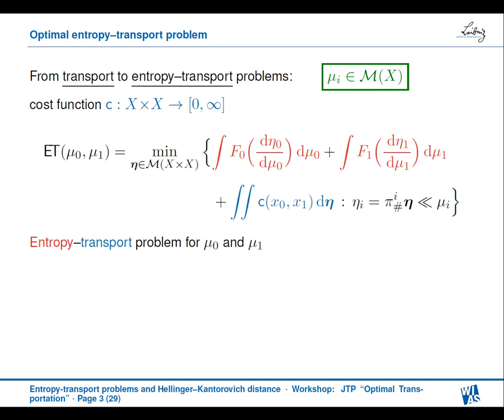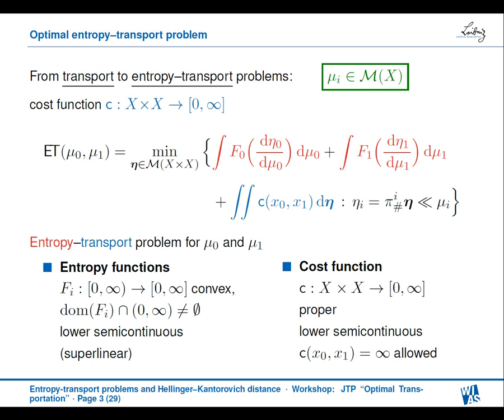To fix this, what we do is we add entropy functionals which take the densities of the transported parts of the mass with respect to the measures μ as an argument, and in this sense they penalize the deviation of the transported measures with respect to the measures μᵢ. We have the transport part which gives the effective transport — so this is an interpolation between absorbing mass or generating mass and transporting mass. This is what we call an entropy transport problem. We assume the entropy functions are convex, there's at least one positive number in the domain, they should be lower semicontinuous and superlinear — though this can be weakened. The cost function should be proper and lower semicontinuous.